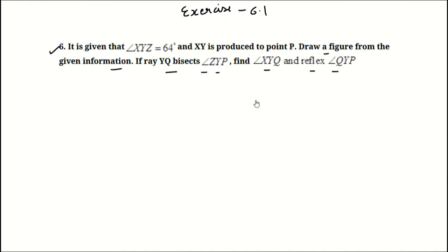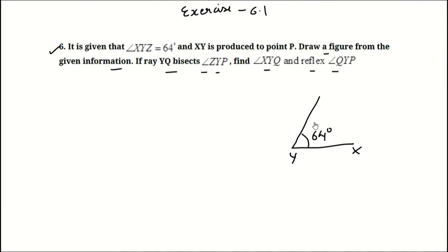We have no figure given here, so we have to make a figure ourselves. First of all, angle XYZ is one angle which is 64 degrees. This is our figure. XY is produced to P, so we have produced point P.